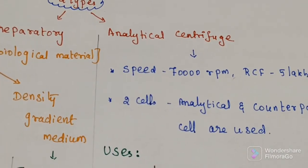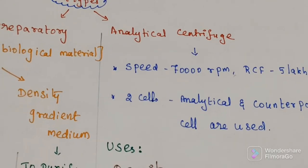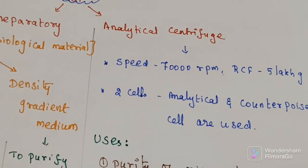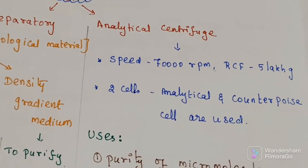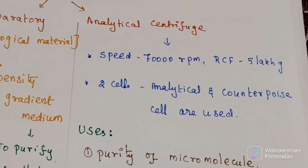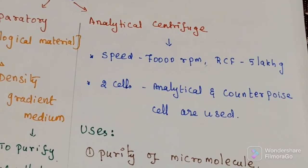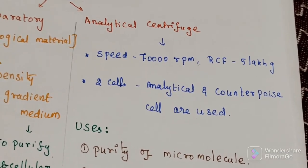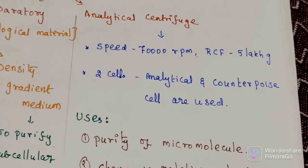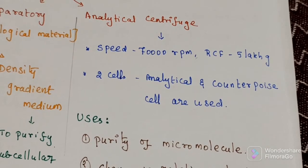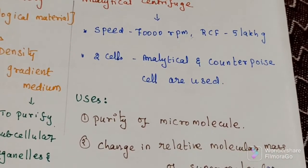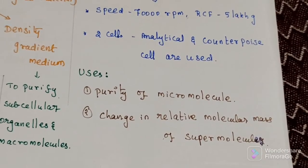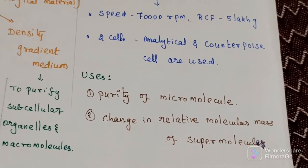The next type is the analytical centrifuge, which operates at a speed of 70,000 RPM with an RCF of 500,000 G. Two types of cells are used: analytical and counterbalance cells. The uses of analytical centrifuge include determining purity of macromolecules and changes in relative molecular mass of supramolecules.